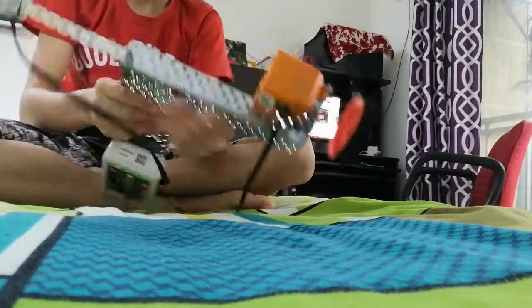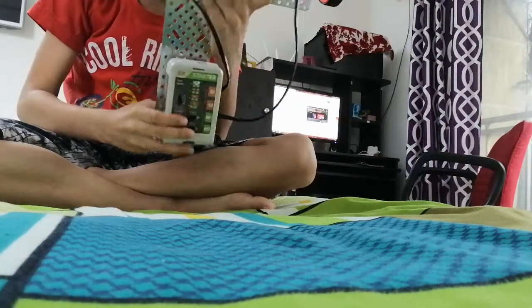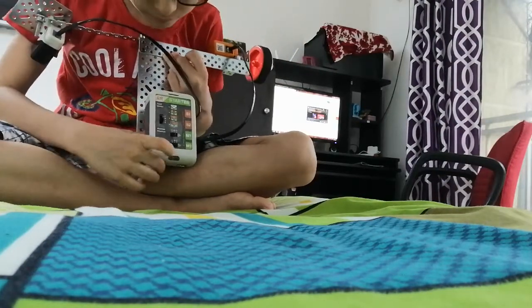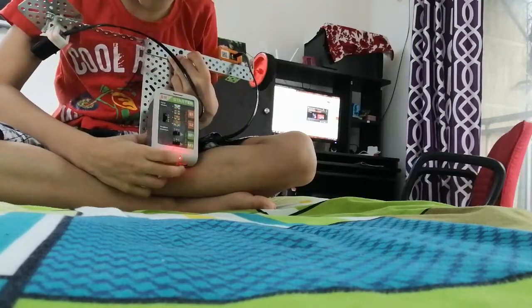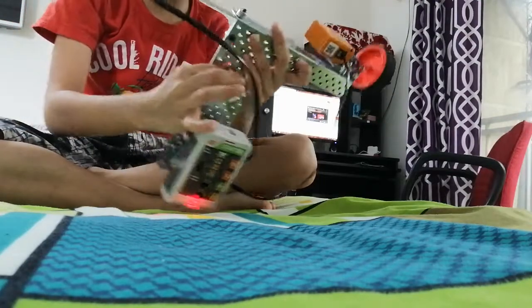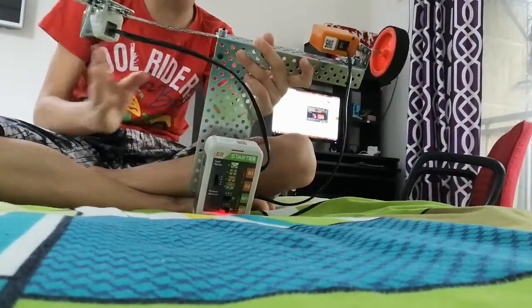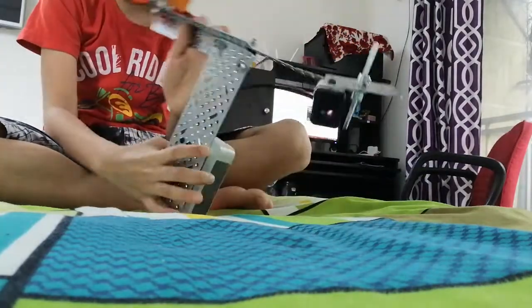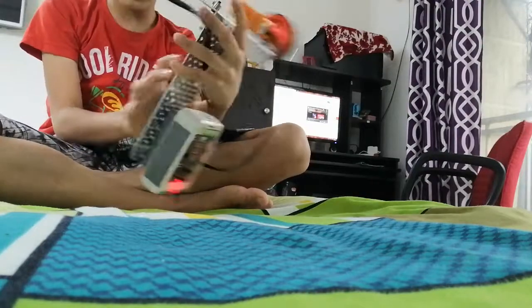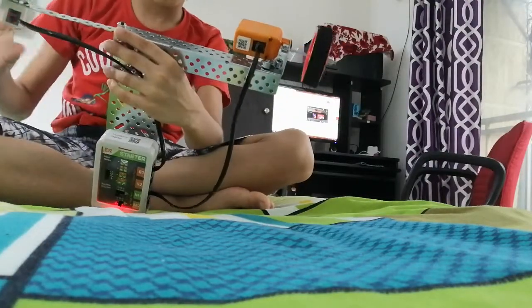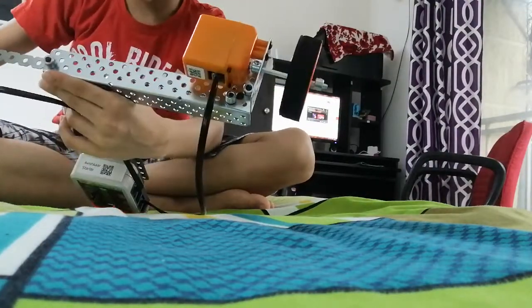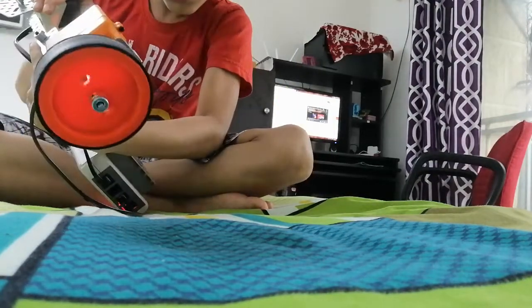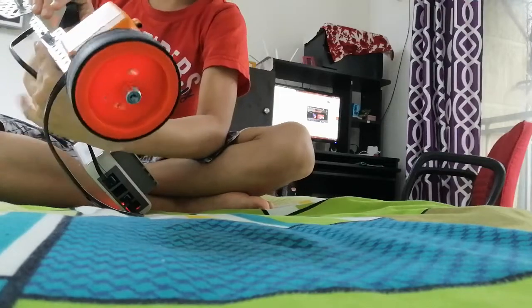Let me show you how this works. First we have to turn on the brain. When we turn on the brain, power goes and now this is the IR sensor. See, if I put my hand over here, this will start going round and round. Can you see?